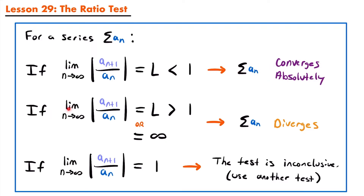If the limit as n approaches infinity of the absolute value of that ratio is greater than 1 or equal to infinity, then we can conclude that the series diverges. And if that limit equals 1, then we cannot conclude whether our series converges or diverges — the test is inconclusive and we will need to use another test.